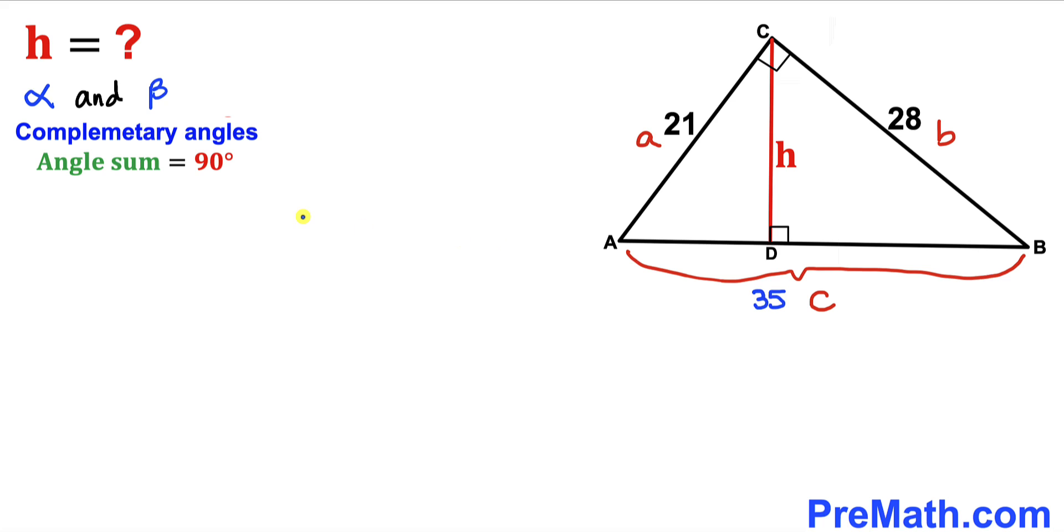And here's our next step. Let's assume that alpha and beta are our complementary angles, in other words their sum alpha plus beta is 90 degrees. Now let's focus on this bigger triangle ABC. Let me call this angle alpha, and we know this is our 90 degree angle, so therefore this is angle beta.